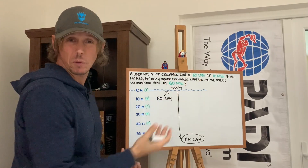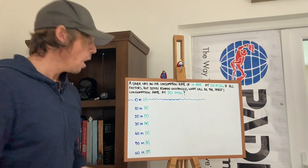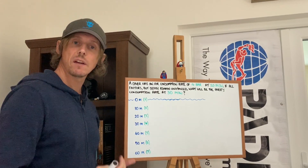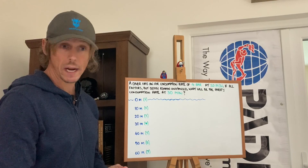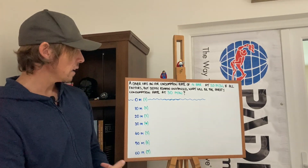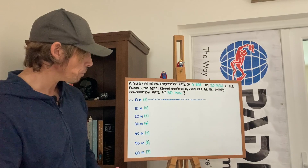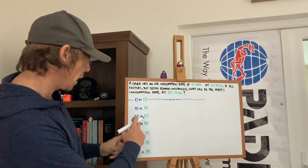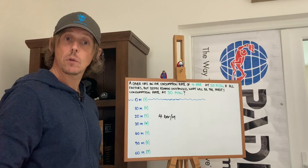Now I'll rewrite the board with some new values — same sort of example, just to build repetition. This time, instead of giving the consumption rate in liters, I've put it in bar — in pressure — but it doesn't matter, we still answer the question the same way. The diver has an air consumption rate of four bar per minute at 20 meters of seawater. If all factors but depth remain unchanged, what will be the diver's consumption rate at 30 meters? So we put in the data: at 20 meters, we breathe four bar per minute.